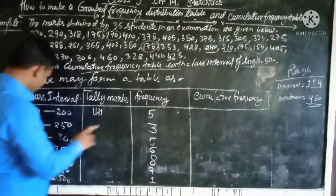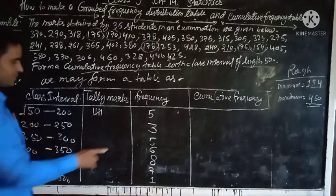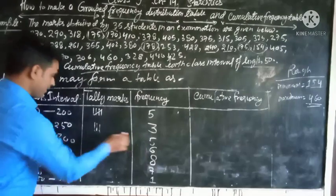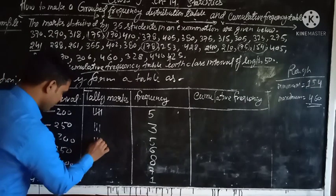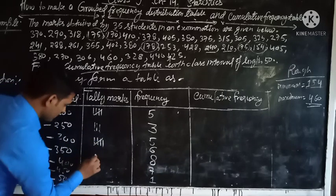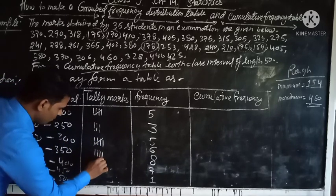The frequency of 250 to 300 is 3, so you put only 3 vertical lines. And again for 5, make 4 straight lines and 1 cross line. For 6, you draw 4 vertical lines and also 1 single.